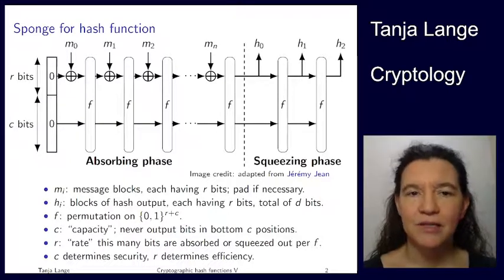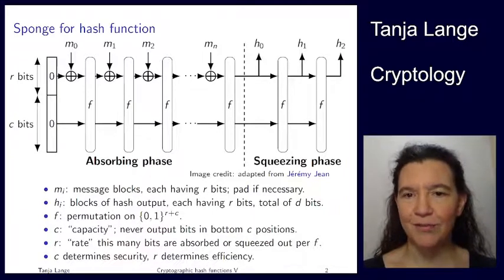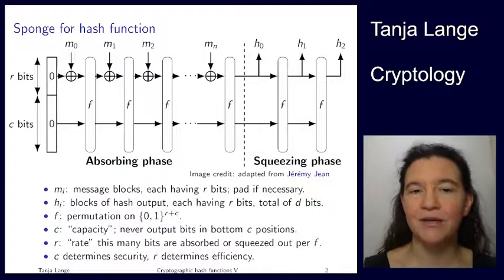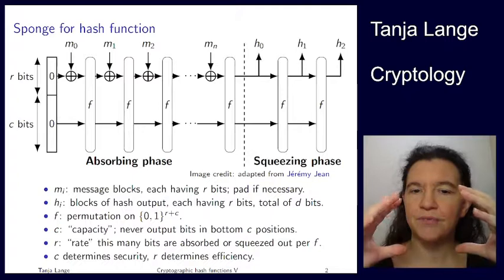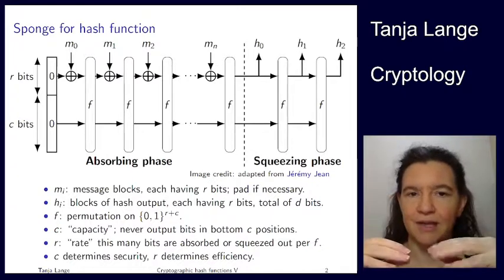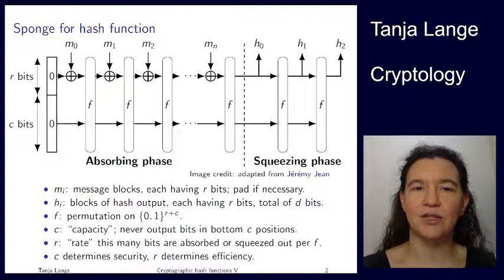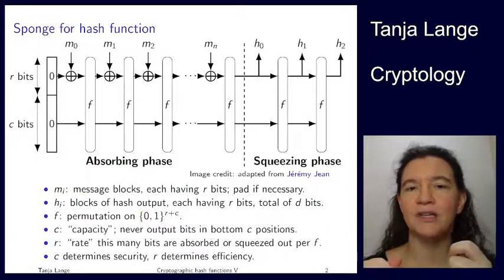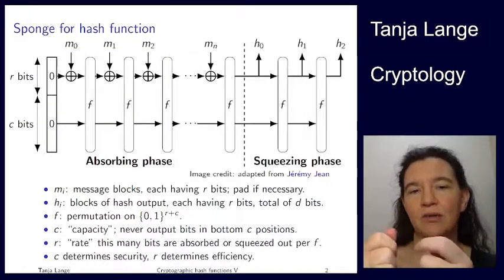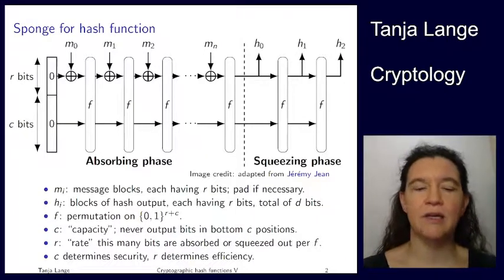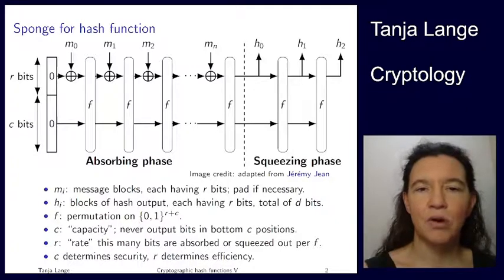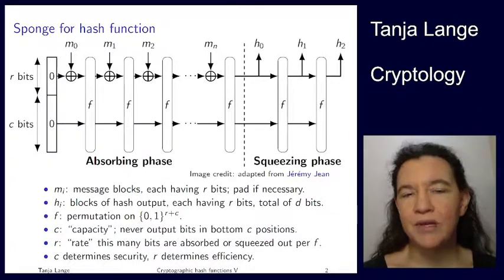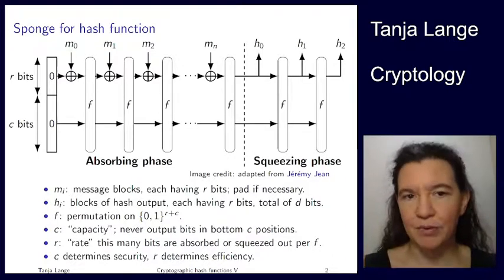So this design is based on what is called a sponge. A sponge, you know from your kitchen cleaning or from your shower, is the porous thing which can absorb a lot of water, and you can squeeze out the water later. The reason that this thing is called a sponge — the sponge construction — is that there is a phase which is called the absorbing phase. What you see happening here is that parts of the message coming in, these M_i, are blocks of the message.